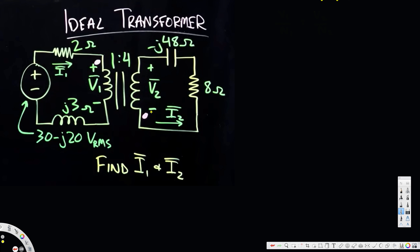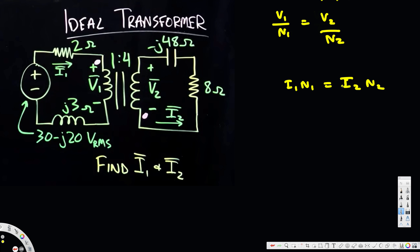This is similar to the dot convention in mutual inductance, but with a little difference. When we consider an ideal transformer we have two key equations: v1/n1 = v2/n2, and i1·n1 = i2·n2. We have to decide whether the sign is negative or positive based on the dot convention.